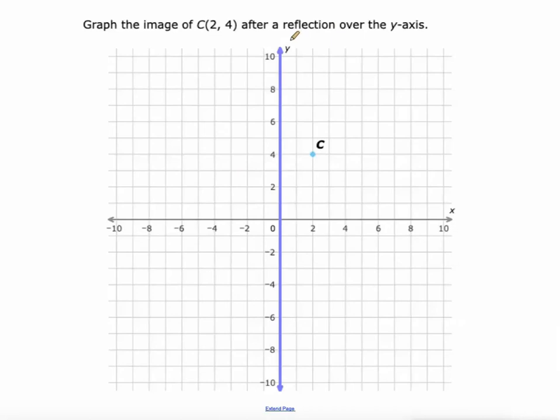Moving on, reflecting this point over the y-axis. So one, two to the right of the y-axis, so I'm going to reflect it by making it two to the left of the y-axis. Check out what happens with c-prime's coordinates. It's at negative 2, positive 4. So when we reflect over the y-axis, the x value becomes opposite, and the y value stays the same.